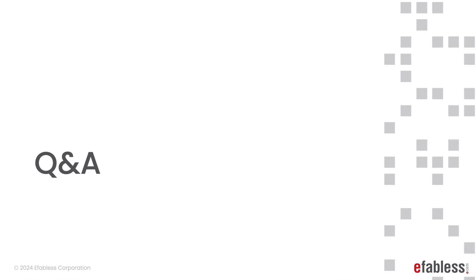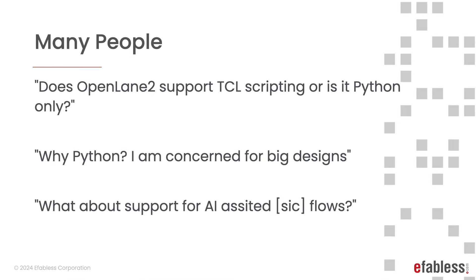This is the Q&A segment — most of these questions were answered live in the webinar, but I re-recorded my responses as my audio was quite poor. A lot of people asked: does OpenLane 2 support TCL scripting or is it Python only, and what about AI-assisted flows? OpenLane 2 supports Python because it is the world's most popular programming language, and it integrates nicely with popular data analytics and machine learning libraries, which does allow for AI-assisted flows. Performance is not a concern as while the backbone is in Python, the tools doing the most computationally intensive tasks — such as detailed routing, synthesis, LVS, and DRC — are programmed in C++.